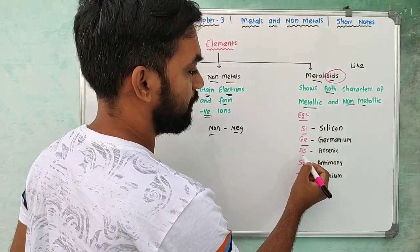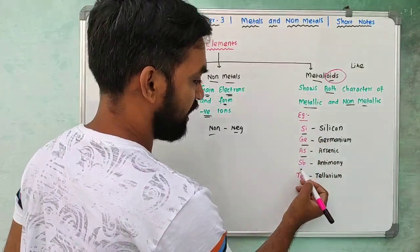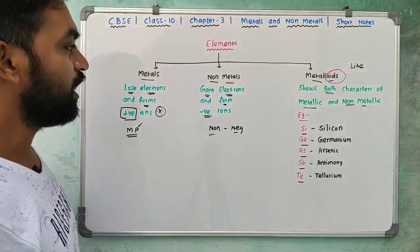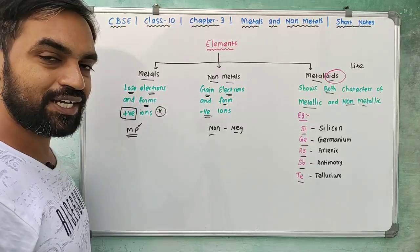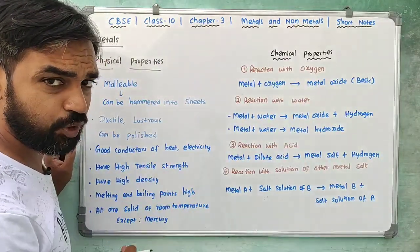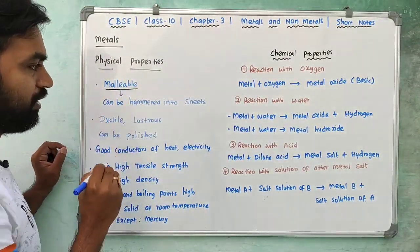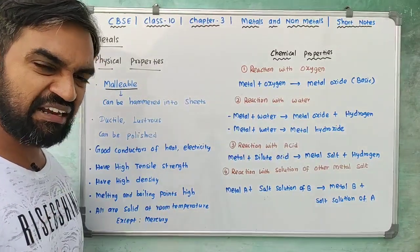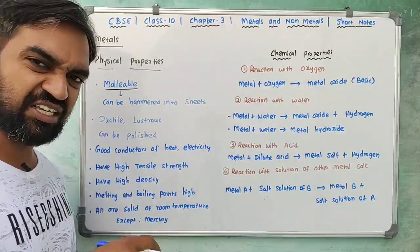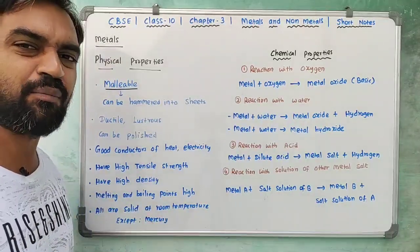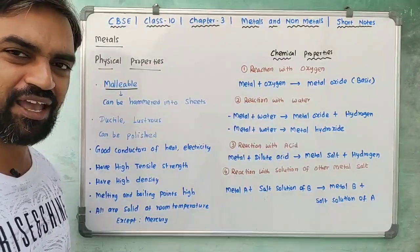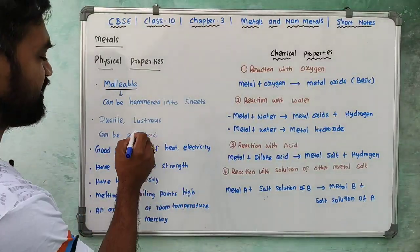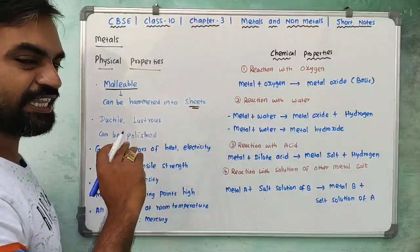Next, metalloids. Examples of metalloids include arsenic, antimony, and tellurium. Metalloids show properties intermediate between metals and non-metals.